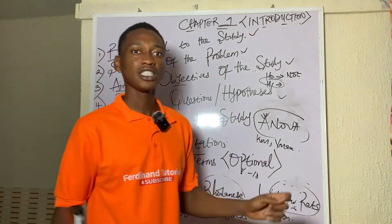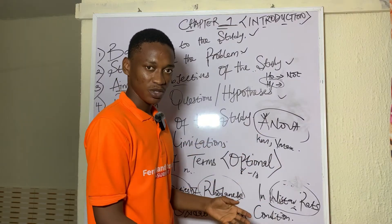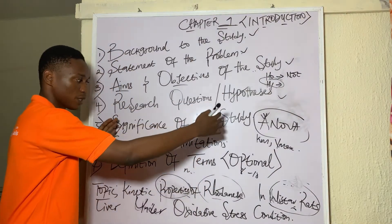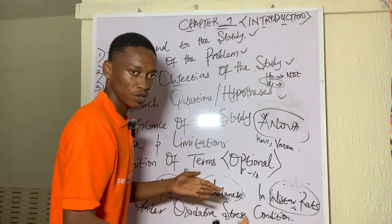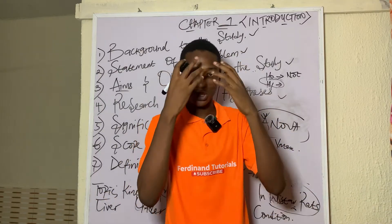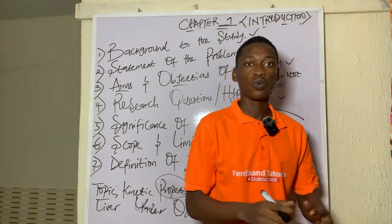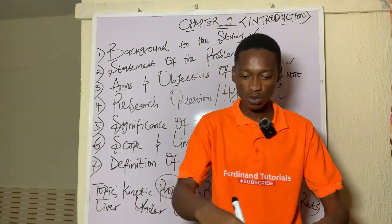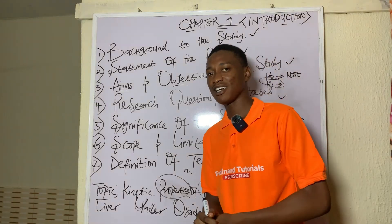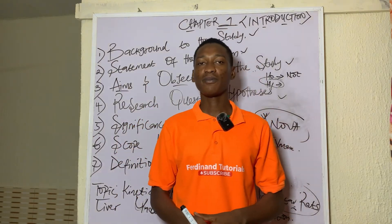That covers Chapter One — the introduction chapter — which has seven sections. In the description I've attached a research article showing what Chapter One looks like; go through it and read it. If you follow the sequence I've given you, you'll find that a research project is not difficult — it's logical and something you can do easily. In my next video I'll be teaching Chapter Two, which focuses on literature review. Add your topic in the comment section so I can use it to teach literature review in Chapter Two. Thank you for watching.